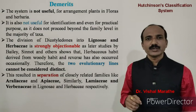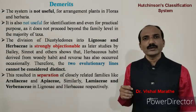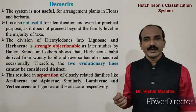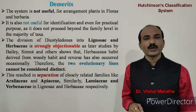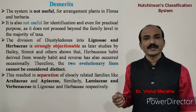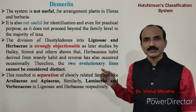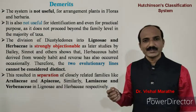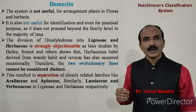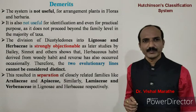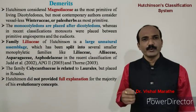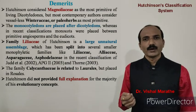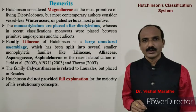Another demerit is that the division of Dicotyledonae into Lignosi and Herbaceae is strongly objectionable. Later studies by Beadle, Stebbins, and others show that herbaceous habit can be derived from woody habit and the reverse has also occurred occasionally. Therefore, the two evolutionary lines cannot be considered distinct. This resulted in the separation of closely related families like Araliaceae and Apiaceae, and Laminaceae and Verbenaceae, into Lignosi and Herbaceae respectively.